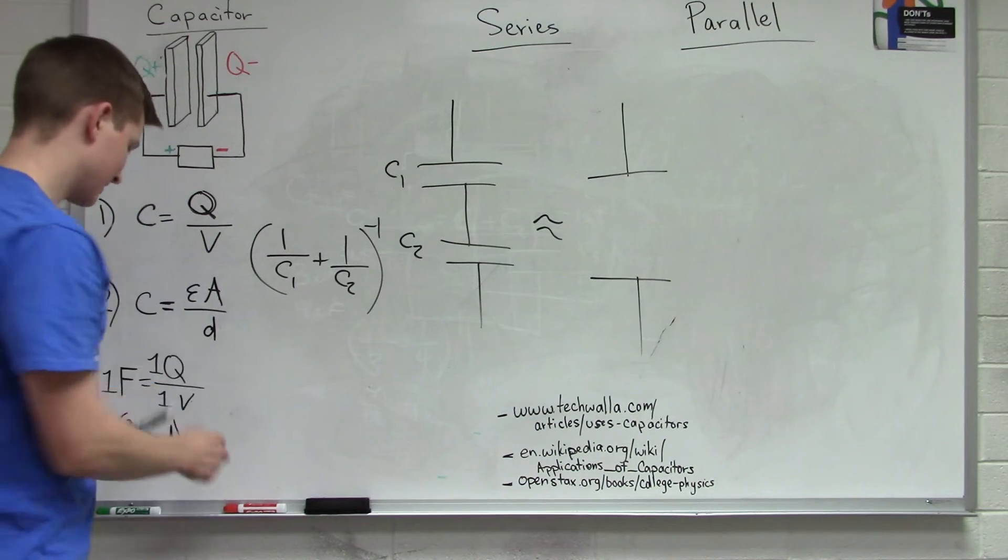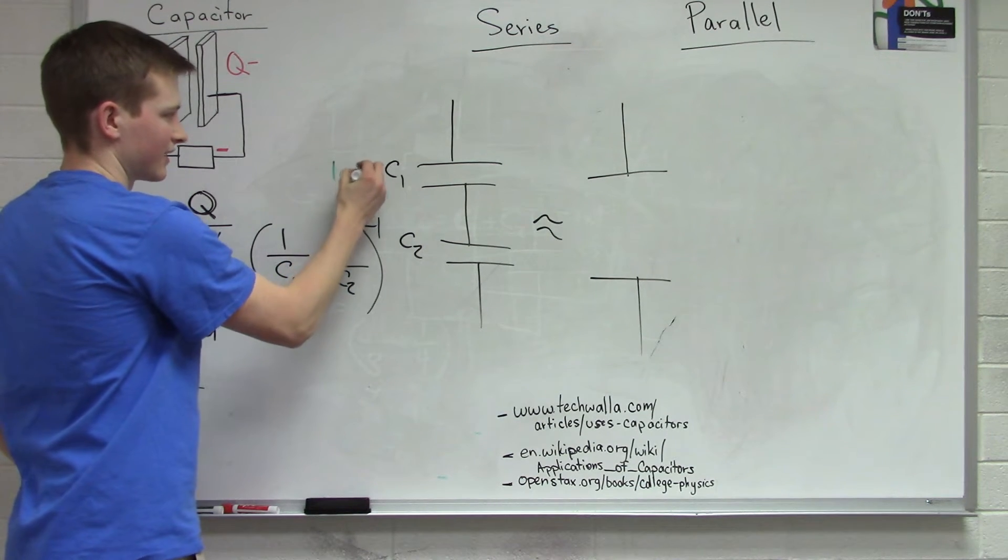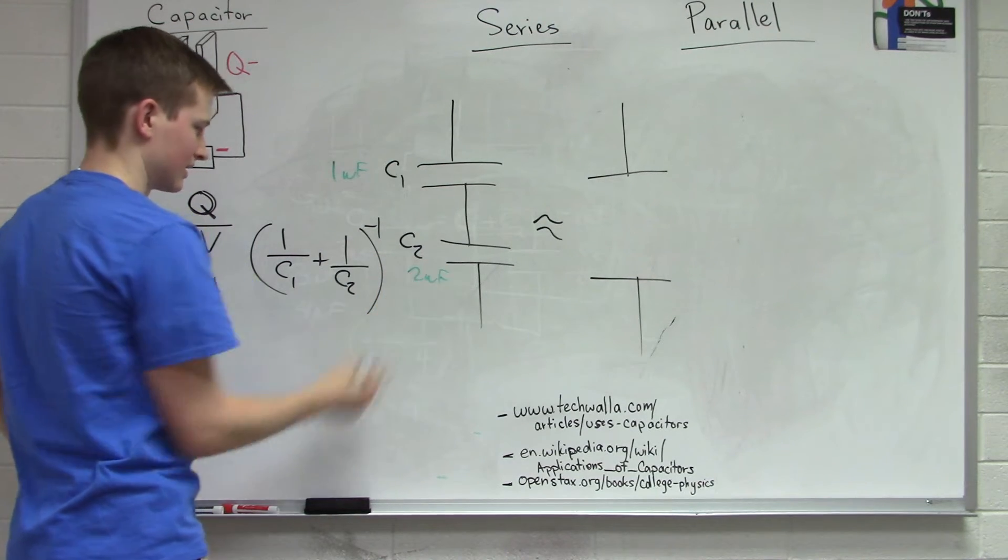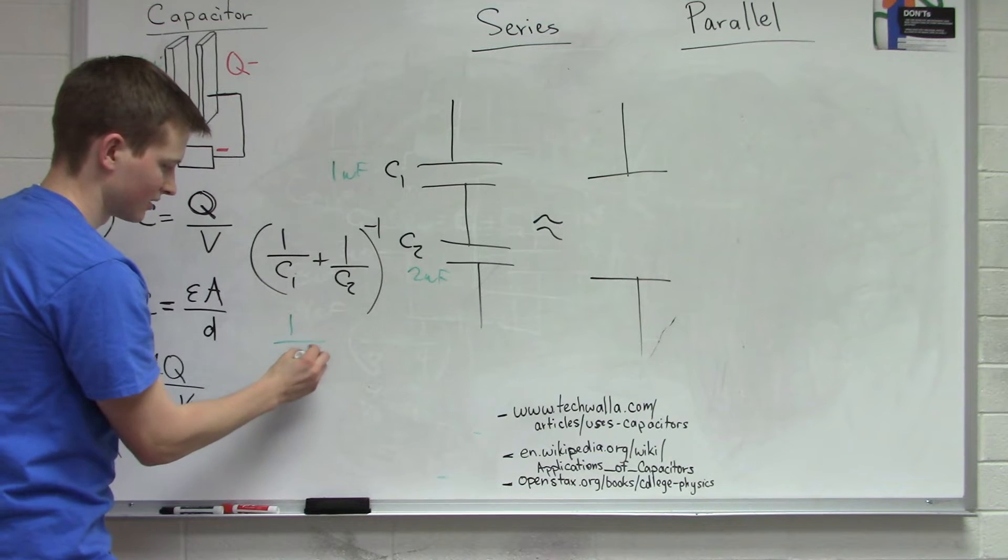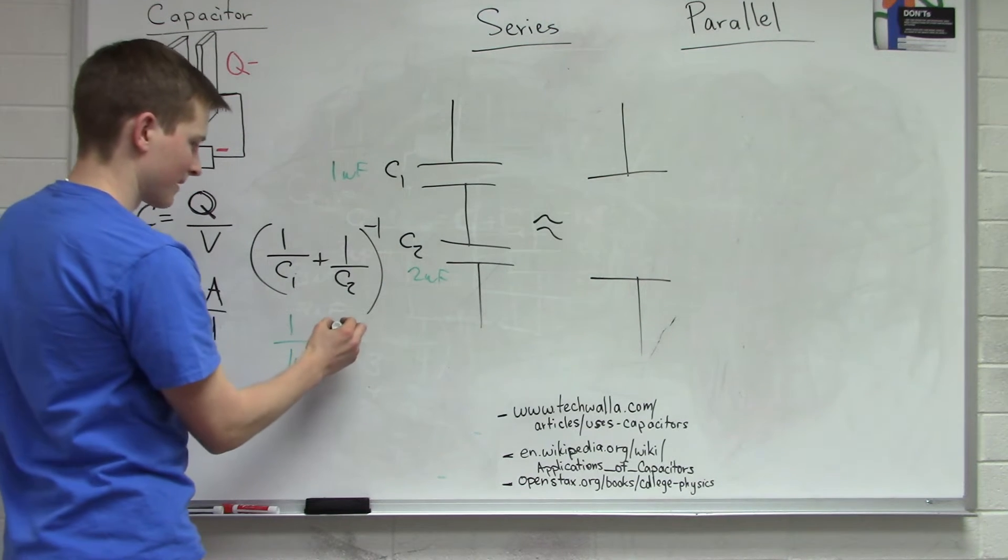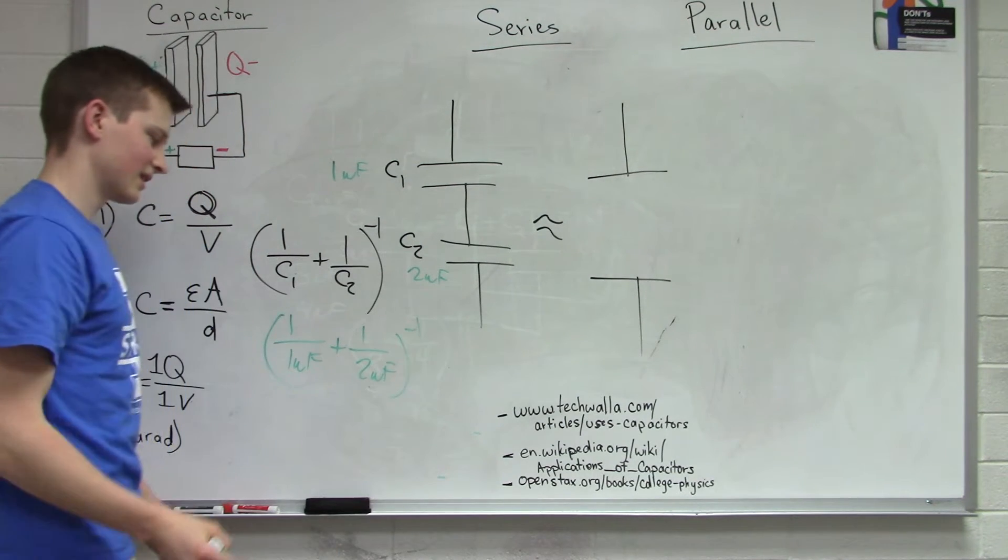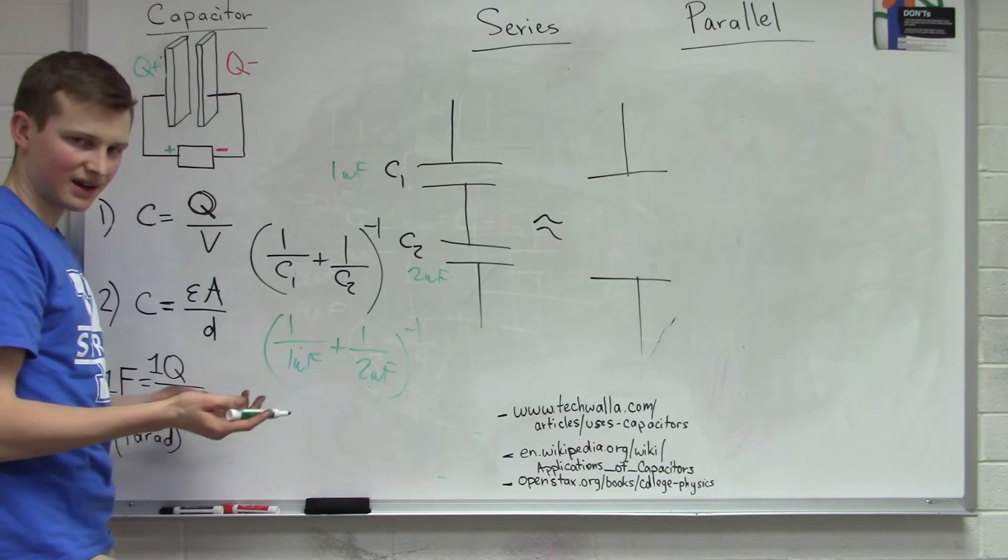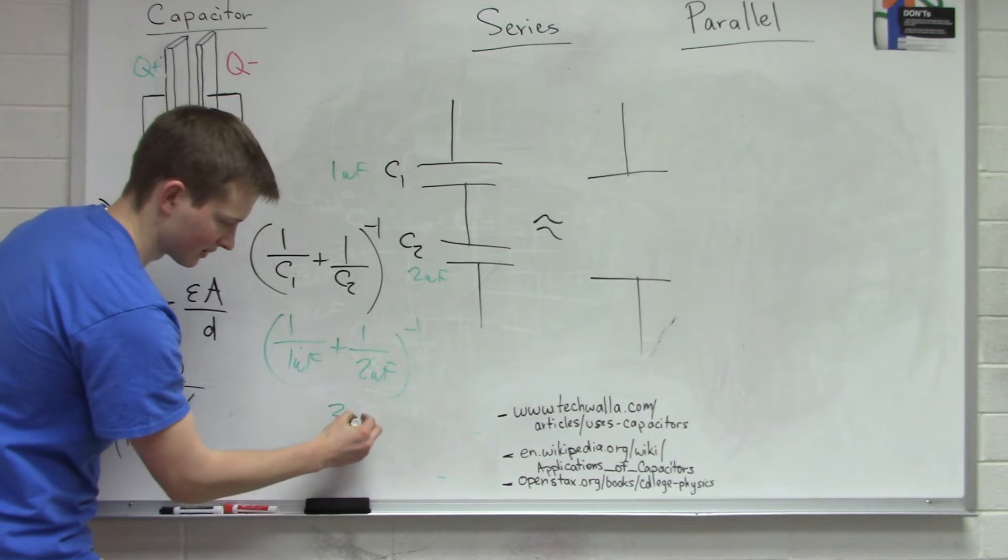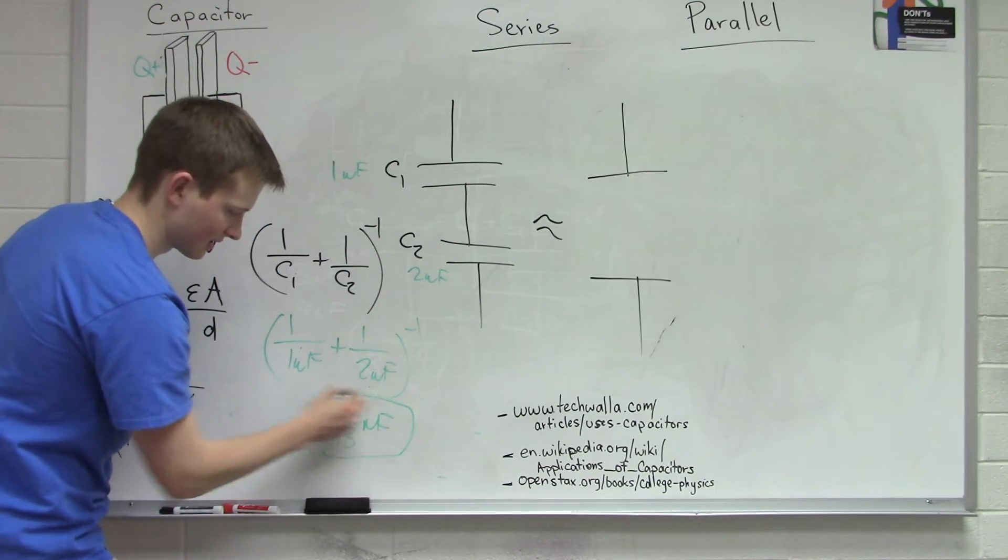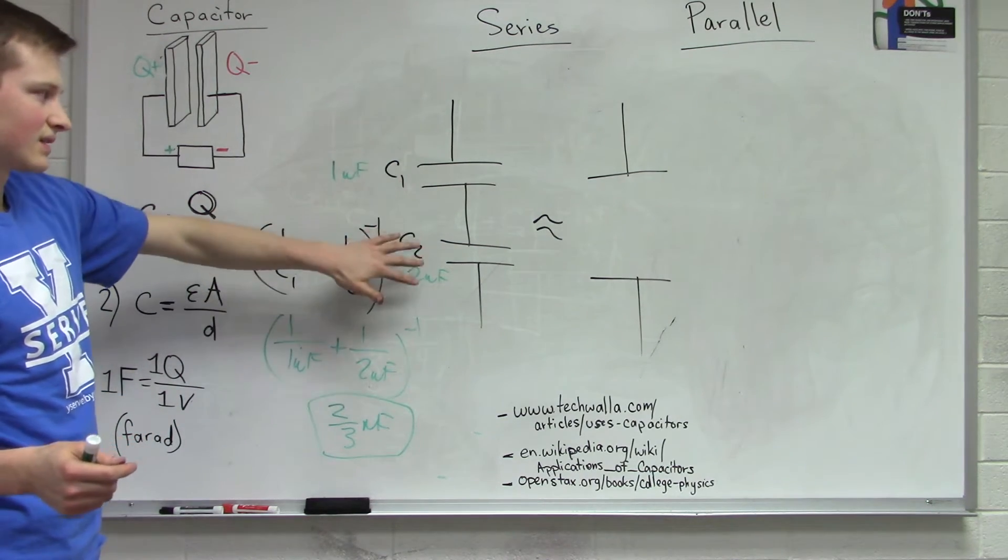So let's plug in some values. Let's say C1 is one microfarad and C2 is two. So let's plug that in. We've got one over one microfarad plus one over two microfarads and that's one plus one half, that's three halves. Take the inverse of that and we get two thirds microfarads. And that would be the total capacitance for this combination of capacitors in series.